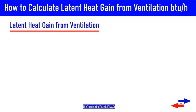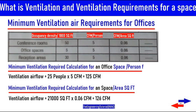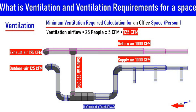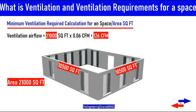The topic of this video is latent heat gain calculation from ventilation. In the first part, we discussed minimum ventilation calculation and ventilation requirements based on CFM per person, CFM per square feet, and CFM based on occupancy density per 1000 square feet. We used two methods: the first method gave us 125 CFM of airflow for 25 people, and the second method gave us 126 CFM for an area of 21,000 square feet.